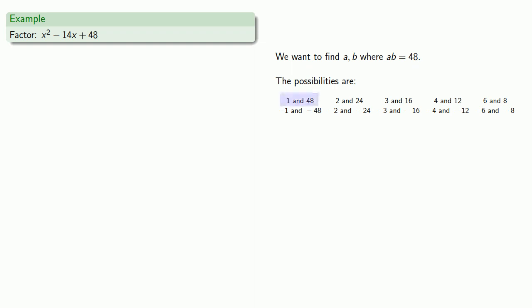We'll try 1 and 48 and see if x squared minus 14x plus 48 factors as x plus 1 times x plus 48. So we expand and find... First of all, this didn't work. We could just move on to trying the next pair of factors, but let's do a little bit of analysis and see if we can make better choices.